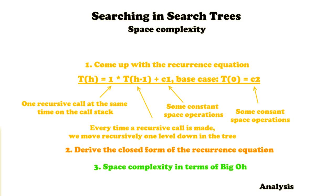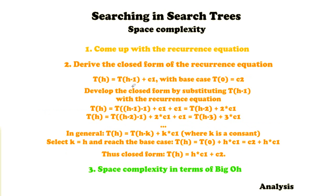Then going to closed form, we're going to derive that basically by substituting T(h-1) with the recurrence equation. So this is the recurrence equation we've just come up with, and then we're going to fill in this h-1, so we're going to substitute that. Then we're basically coming up with a general formula.